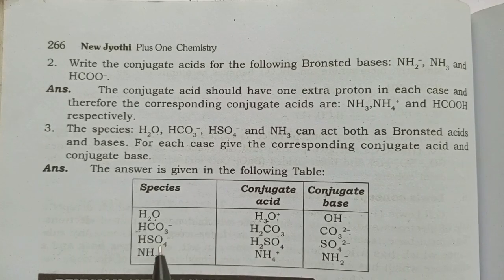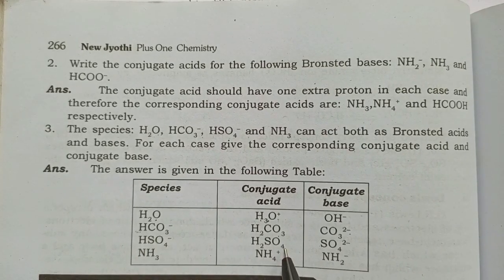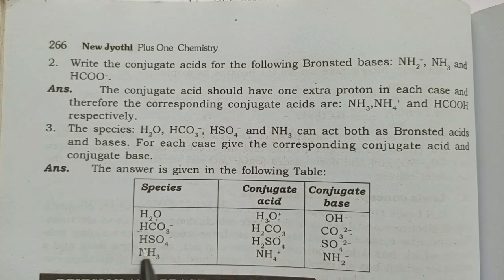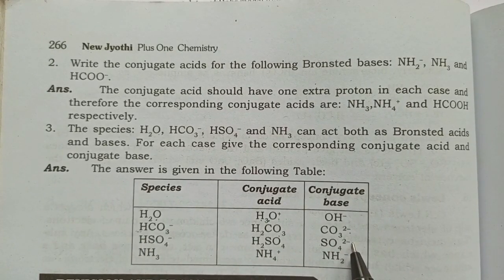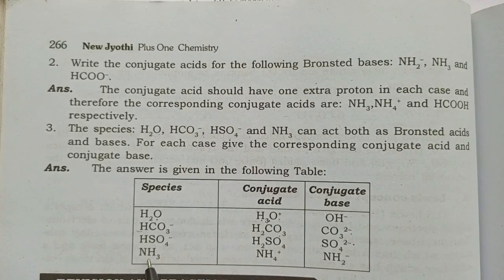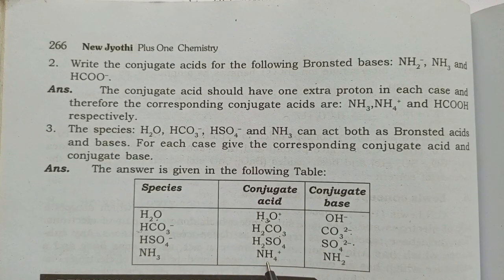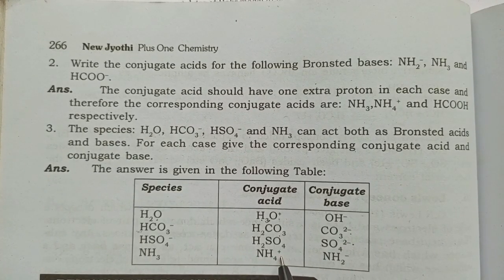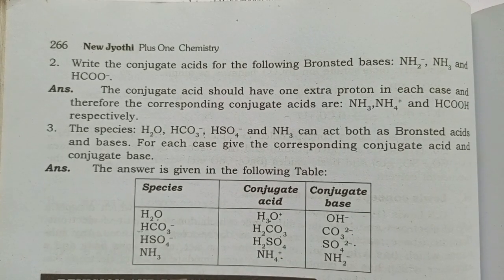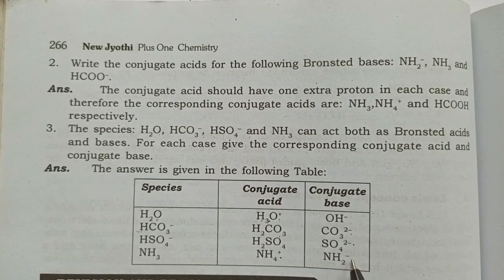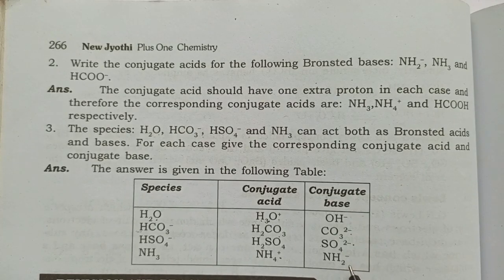For HSO4⁻: it gains H+ to form H2SO4, which is the conjugate acid. HSO4⁻ removes H+ to form SO4²⁻, which is the conjugate base. For ammonia: NH3 gains H+ to form NH4+, which is the conjugate acid. NH3 removes H+ to form NH2⁻, which is the conjugate base.